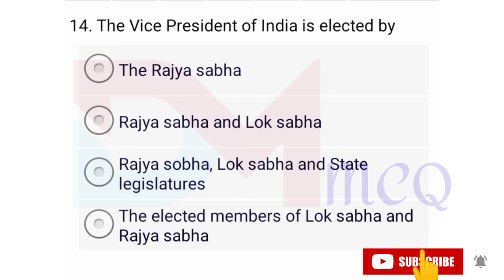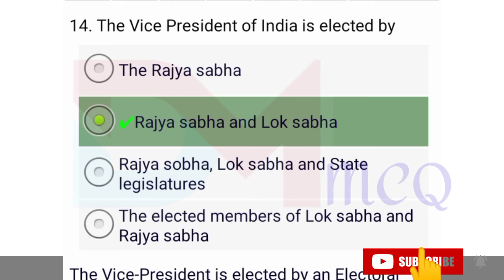Question number fourteen: The Vice President of India is elected by — correct answer is Rajya Sabha and Lok Sabha. Yes friends, the Vice President is elected by an electoral college consisting of the members of Lok Sabha and Rajya Sabha.